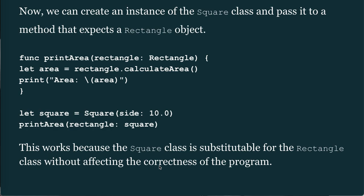Now we can create an instance of Square and pass it to a method expecting a Rectangle: func printArea(rectangle: Rectangle) { let area = rectangle.calculateArea(); print(area) }. Let square = Square(side: 10.0); printArea(rectangle: square). This works because the Square class is substitutable for the Rectangle class without affecting correctness.